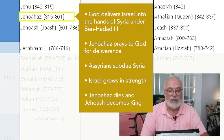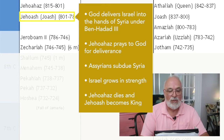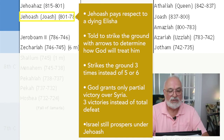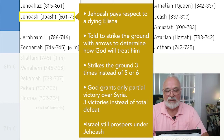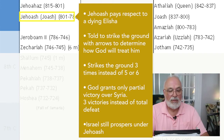Jehoahaz dies. Jehoash becomes king of Israel. Jehoash pays respect to a dying Elisha and is told to strike the ground with arrows to determine how God will treat him. He strikes the ground only three times instead of five or six; therefore God grants only partial victory over Syria — three victories instead of a total defeat. Nonetheless, Israel continues to prosper under Jehoash.